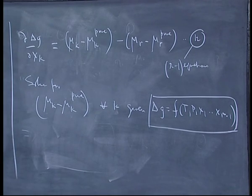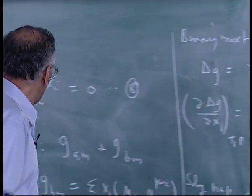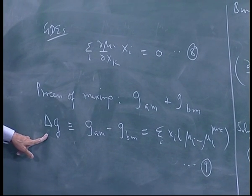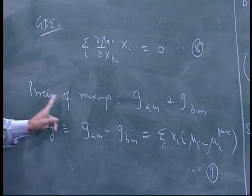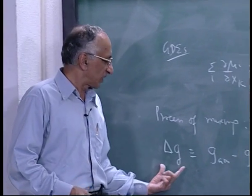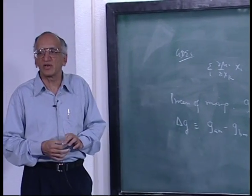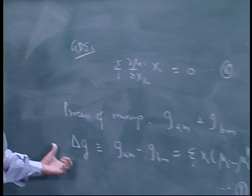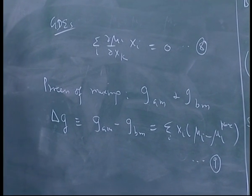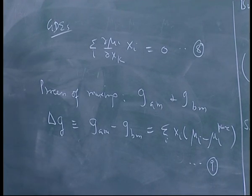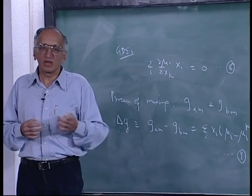The δG function must satisfy boundary conditions: it should go to zero when you have a pure substance (all mole fractions zero except one). For a binary mixture, you write δG = x₁ x₂ f(x₁), where f is an arbitrary bounded function. By Weierstrass's theorem, f can be approximated by a polynomial, generating a whole series of models — this is called the Wohl model. Initially people derived models in different ways; Wohl introduced this polynomial expansion.